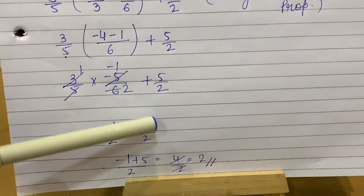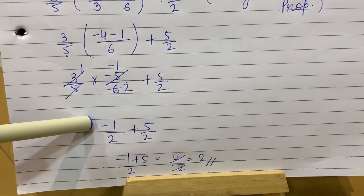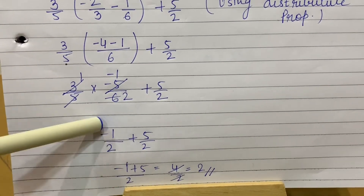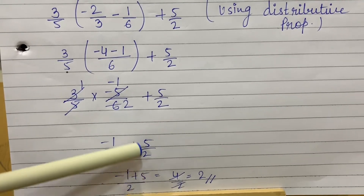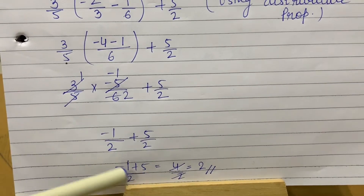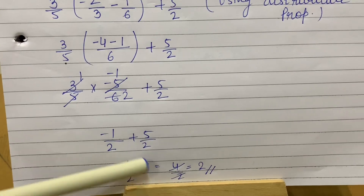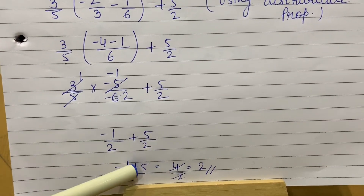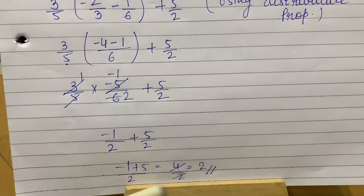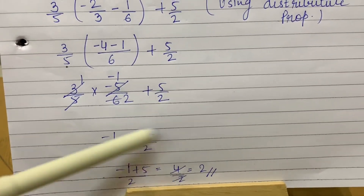So it becomes 3 upon 5 into minus 5 upon 6. Now we do cutting: 5 and 5 cancel to give minus 1; 3 upon 3 twos means it becomes minus 1 upon 2 plus 5 upon 2. Now taking LCM of both, LCM is 2. So 2 ones are 2, minus 1 into 1 is minus 1; 2 ones are 2, 1 fives are 5. Plus 5. Plus minus: 5 minus 1 is 4. Sign of bigger number. 2 plus, 2 ones are 2, 2 twos are 4. Ultimate answer is 2.